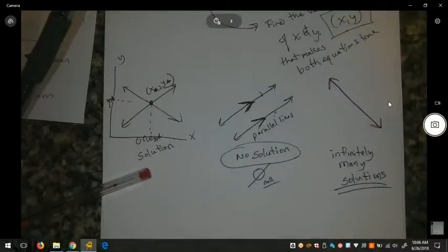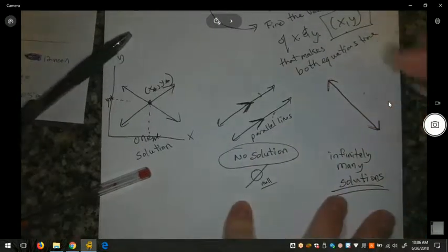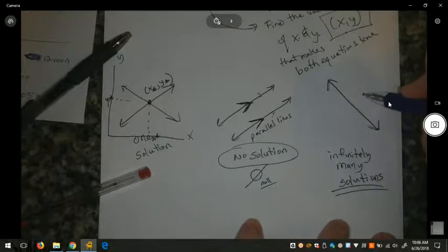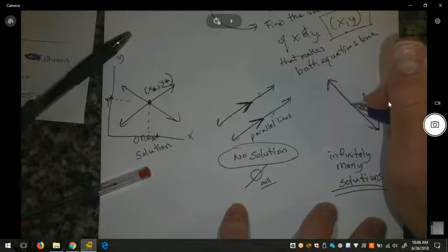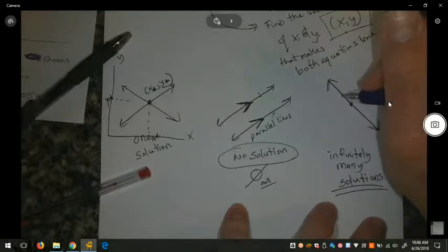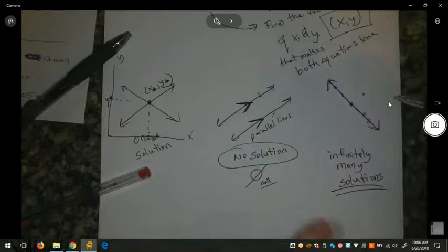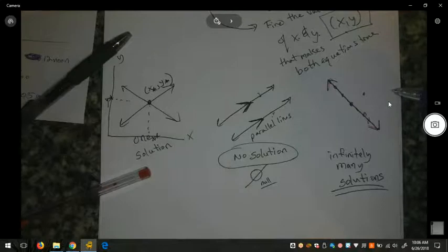What does that mean? That means that while a point out here in the coordinate plane is not a solution to either equation, every point on the dark line and every point on the red line, every single point is a solution to both. So that would give us infinitely many solutions.